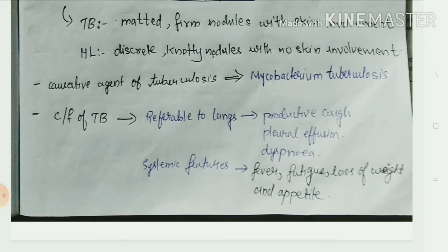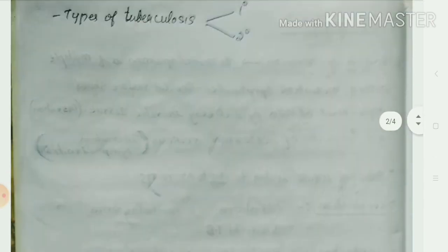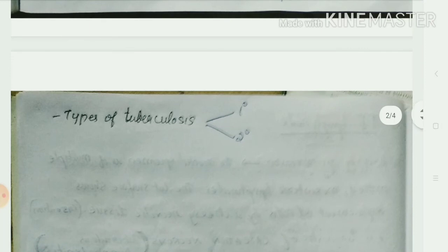The causative agent for tuberculosis, as you all know, is Mycobacterium tuberculosis. Clinical features referable to the lungs include productive cough, pleural effusion, and dyspnea. Systemic features include fever, fatigue, and loss of weight and appetite.